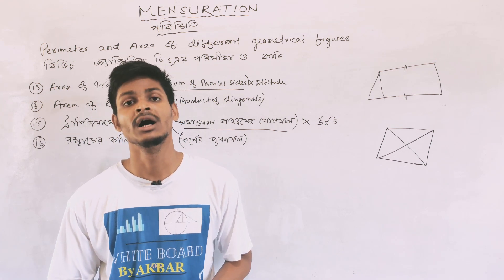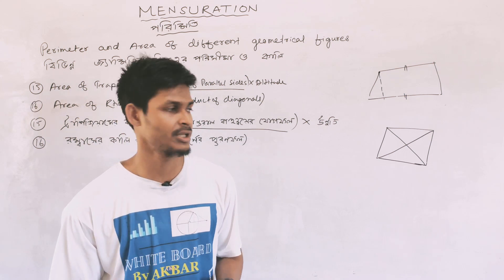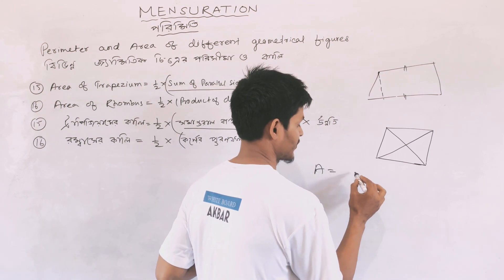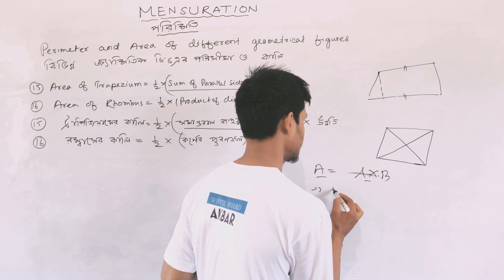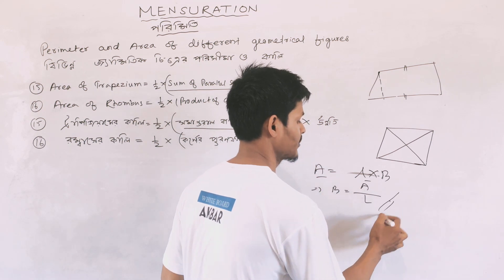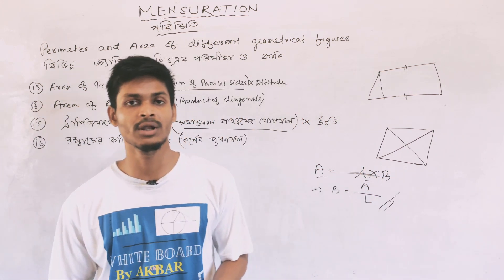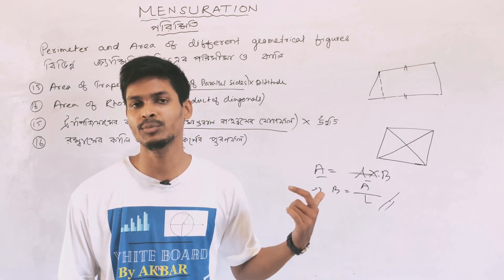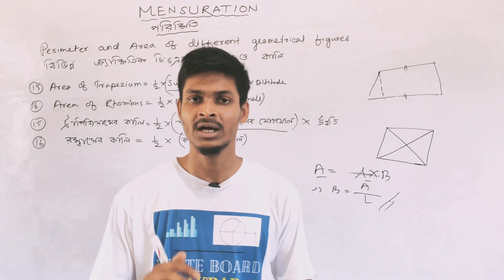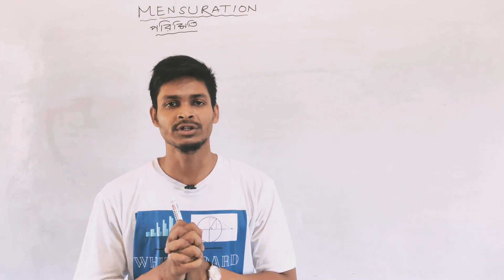Through these formulas, area of rectangle is length into breadth. If you know the length and area, you can find the breadth. These formulas are very important and we will easily use them in MCQ questions. In the video we will try all the formulas — make sure you remember all these formulas.